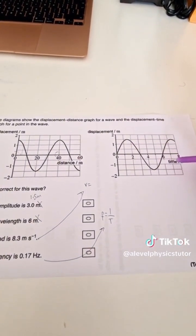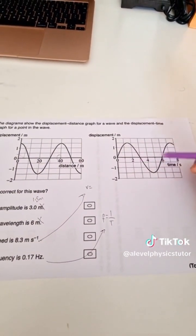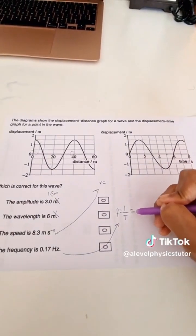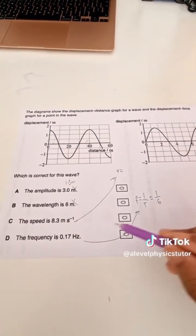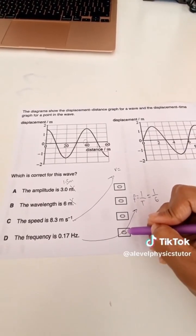Now time period is the time taken for one complete oscillation. If we look at this graph here, which has time on the x-axis, we get that one complete oscillation is from 0 to 6 seconds, meaning the time period is 6 seconds. So the frequency is 1 over 6, which if you put it into a calculator gives you 0.17, so this is the correct statement here.